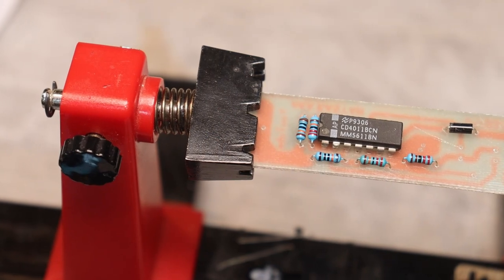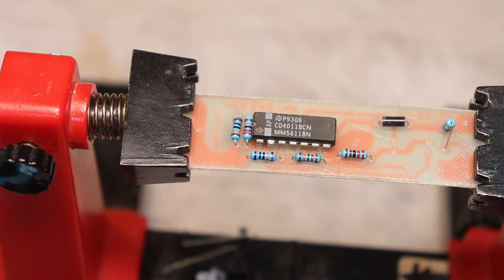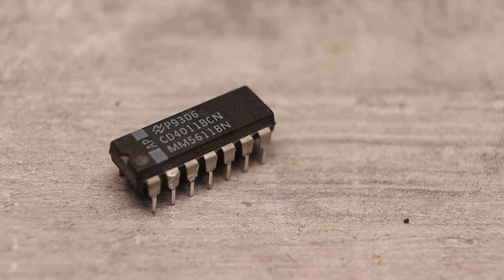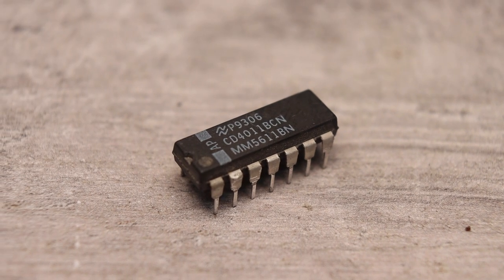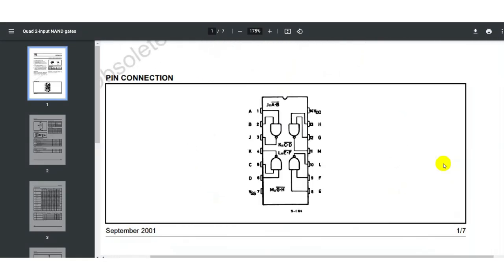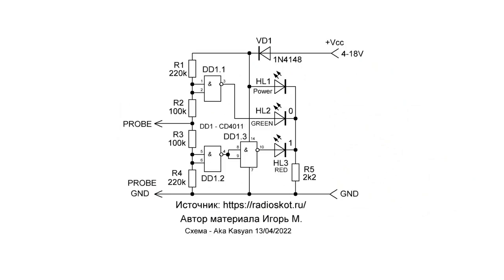Device assembled on a compact printed circuit board. The circuit contains just one CD4011 chip, which includes four logic elements, NAND. One of the analogs is KR1561LA7. Here we used three logic elements out of four.